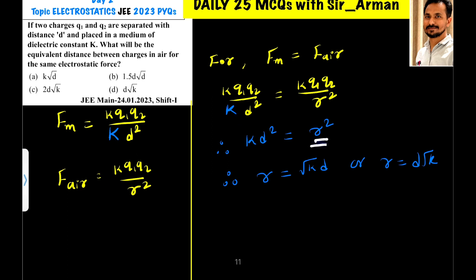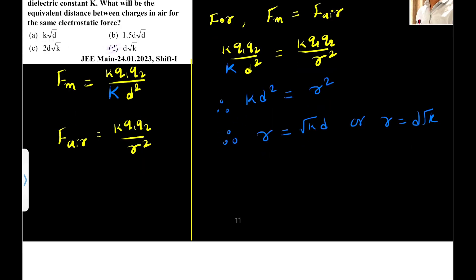So, if you make r as the subject, then r equals root k into d. So, the correct answer is option d, d root k, because here if you take root on both sides, then this and this, so r equals d into root k. So, d option.